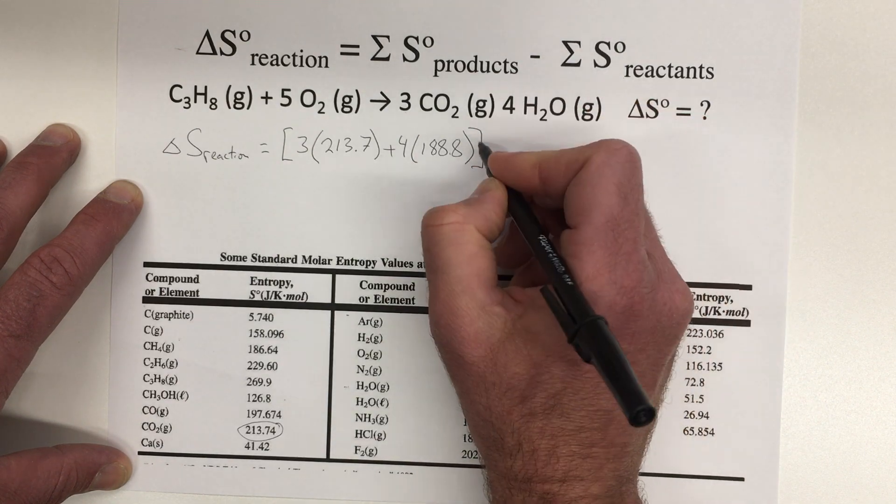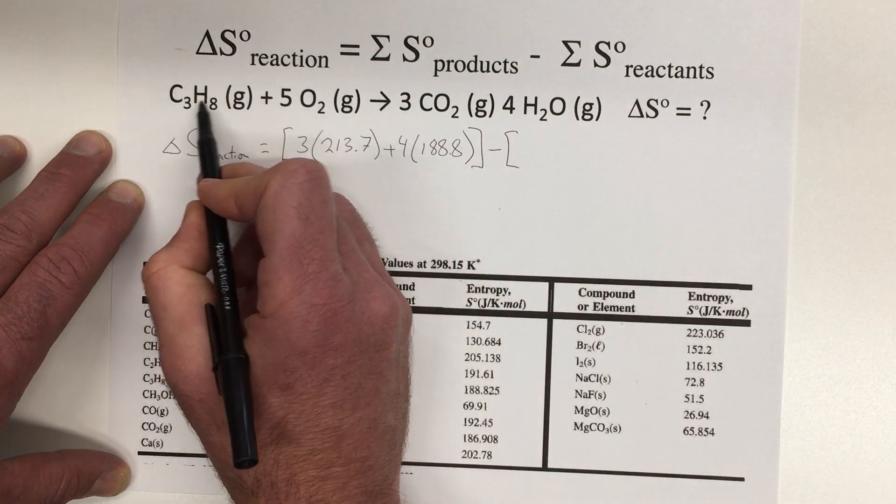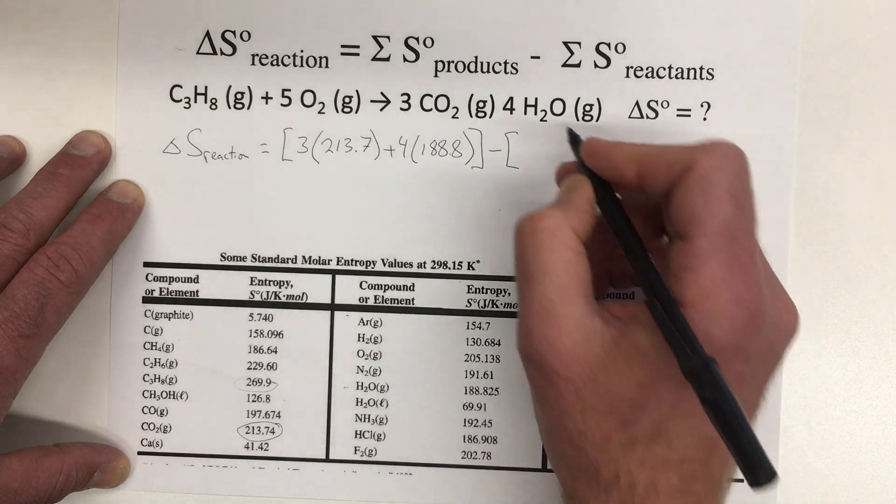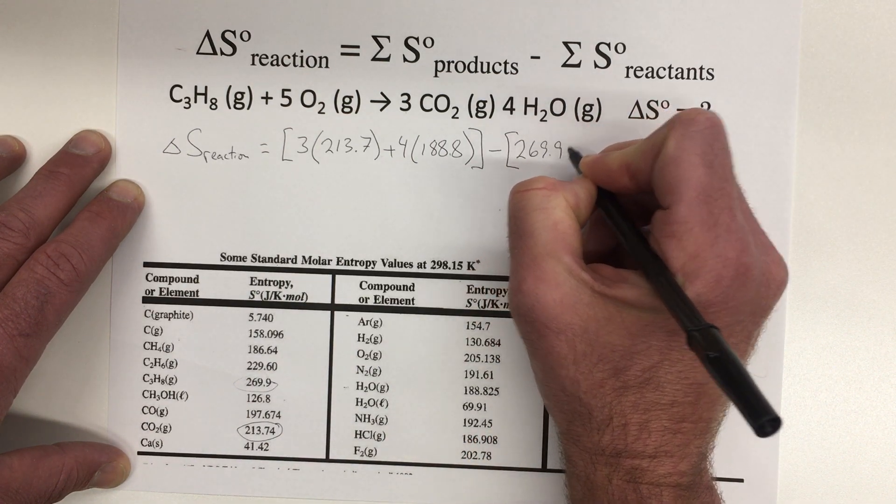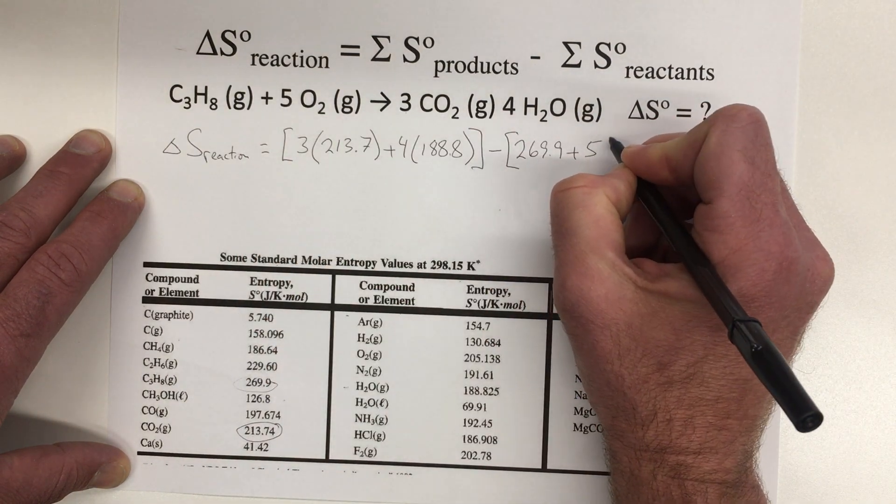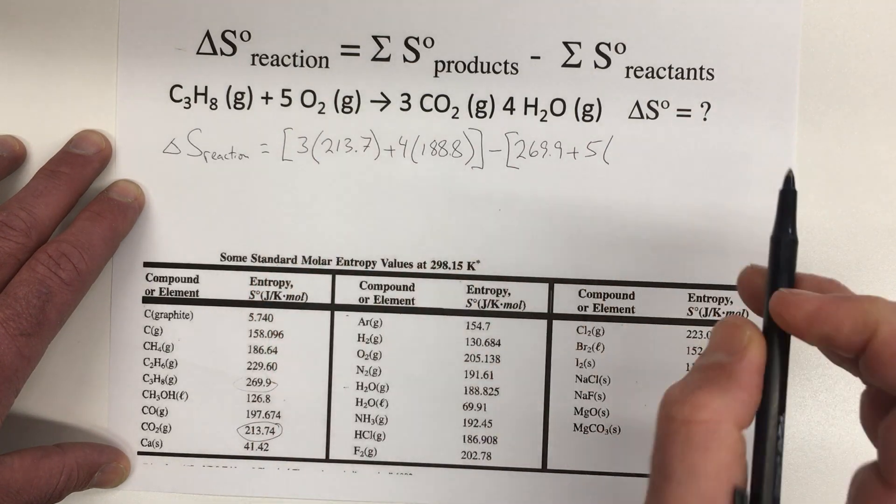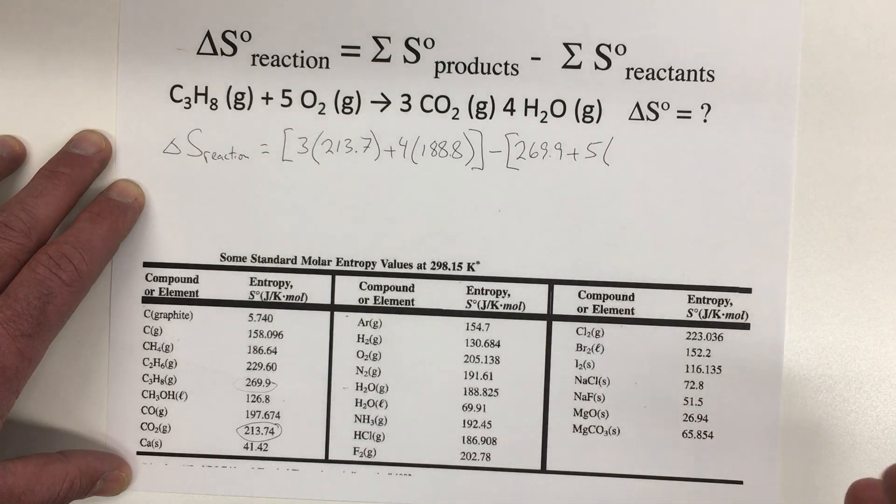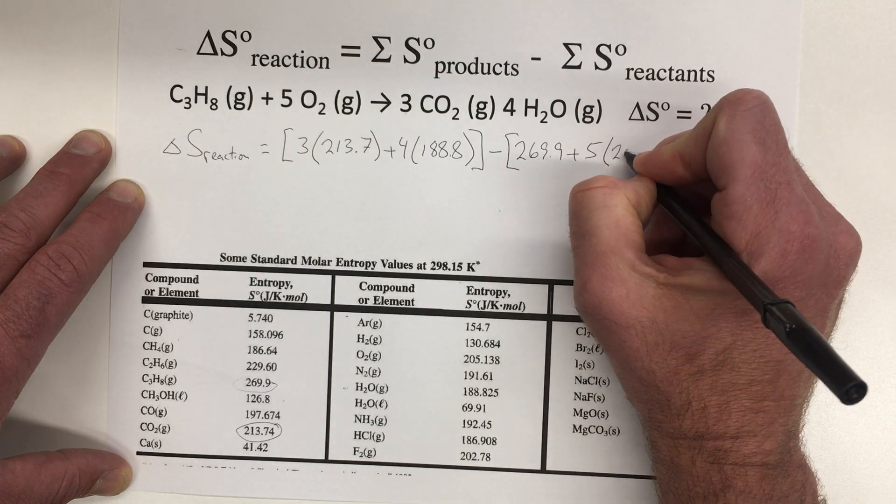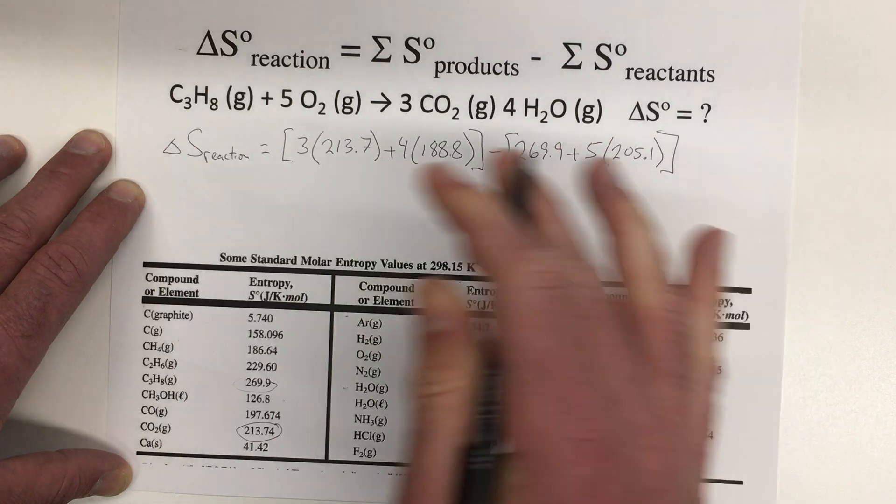Those are our products. And then minus the sum of the entropy changes of our reactants. So our reactants are the C3H8. C3H8 is right here with 269.9. And then plus our five moles of oxygen. So remember that oxygen, even though it's an element in its standard state, it's not enthalpy but entropy value. So it does have a value, we need to find it. It's not going to just be zero. It's 205.1.